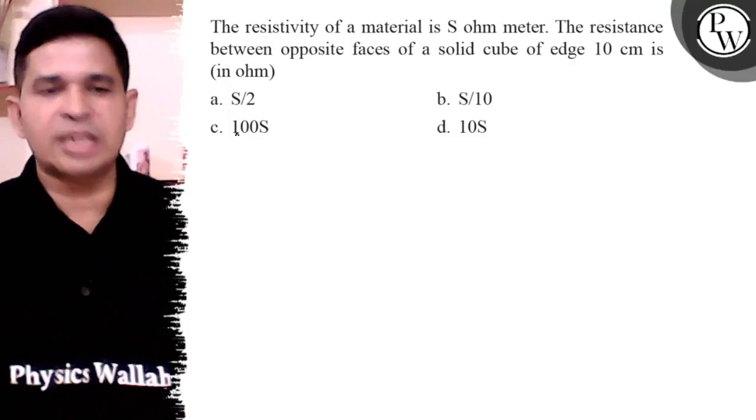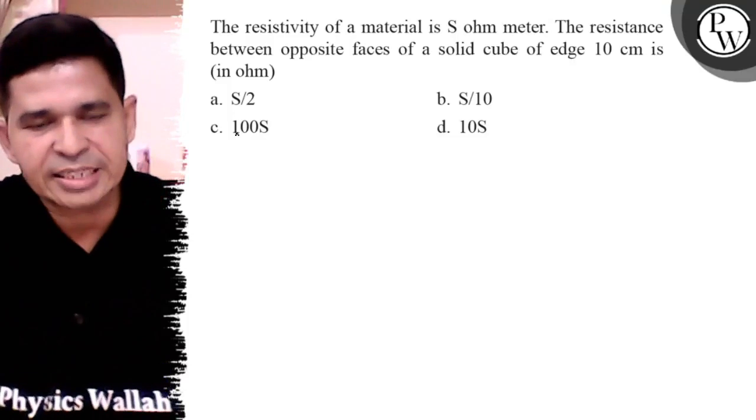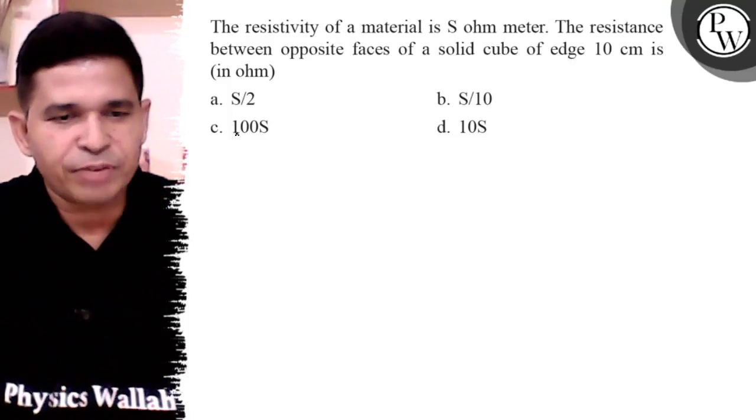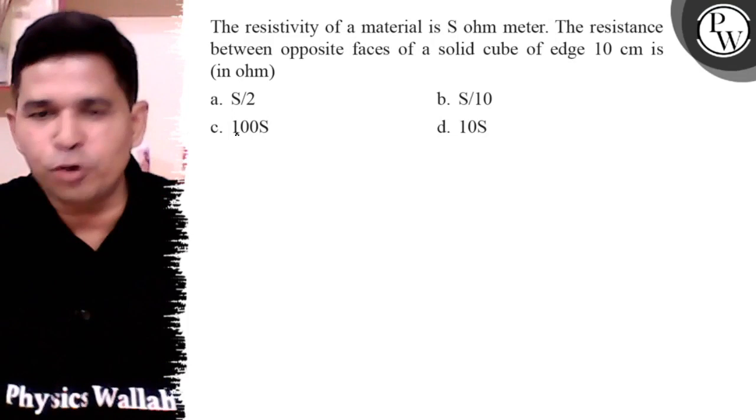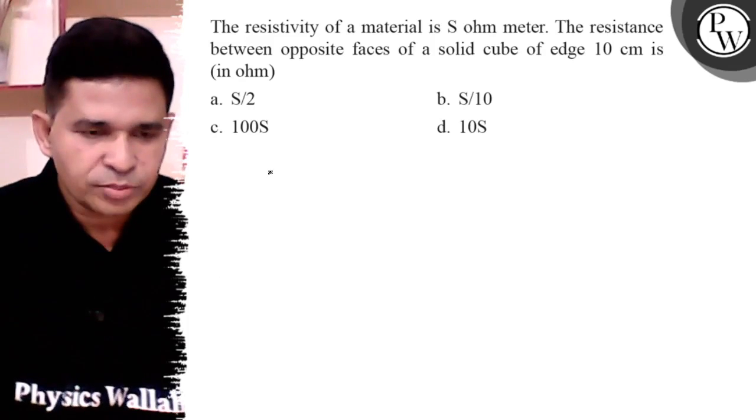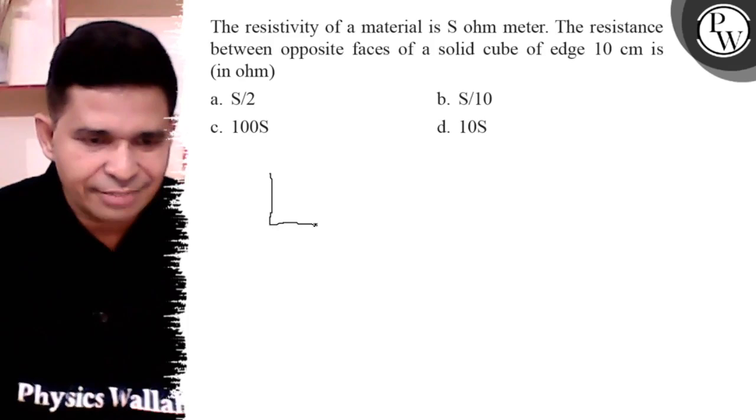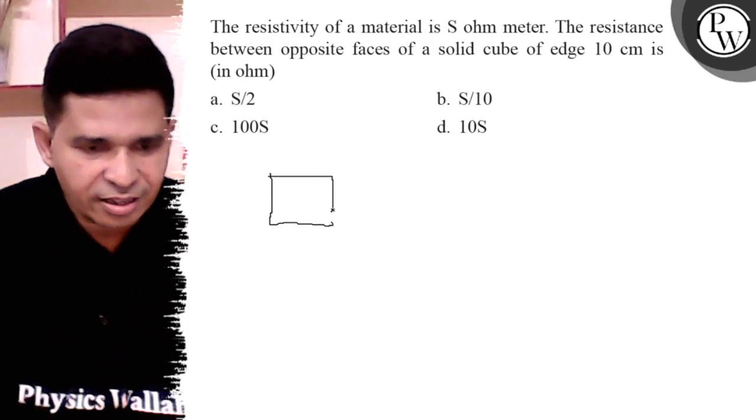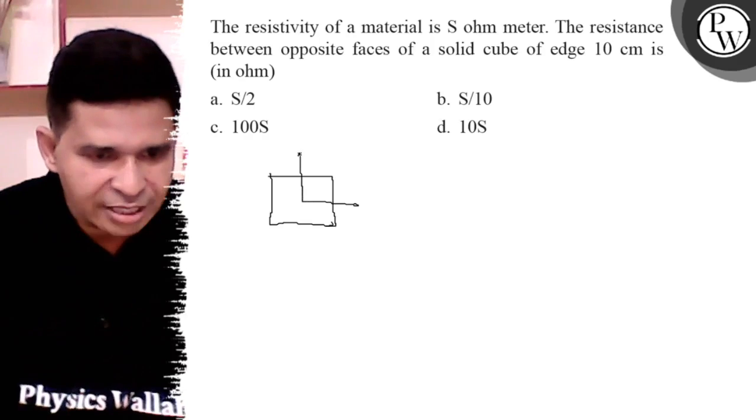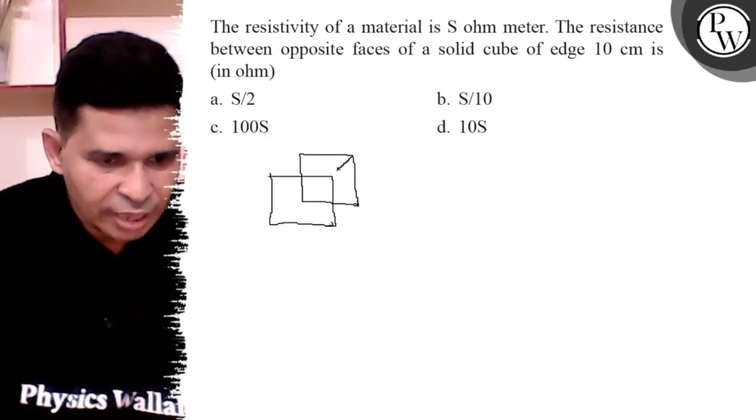Let us see this question. The resistivity of a material is S ohm per meter. The resistance between opposite faces of a solid cube of edge 10 centimeter is. Here resistivity is given for the cube and the cube has all sides 10 centimeter.